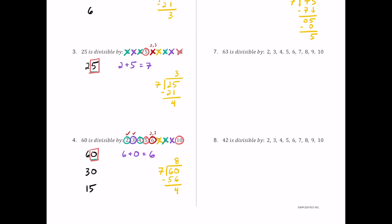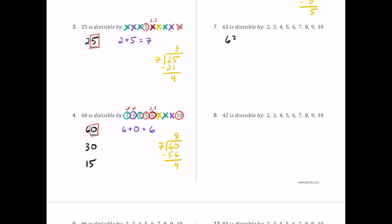For number 7, we have 63. The last digit is 3, which is odd, so 2, 4, and 8 are crossed off. You can also cross off 6 and 10 right away. The sum 6 plus 3 is 9, which is a multiple of both 3 and 9, so those both work. The last digit is 3, not 5 or 0, so 5 and 10 fail. Since 2 failed, 6 fails. For 7: 9 times 7 is exactly 63, so 7 works! So 63 is divisible by 3, 7, and 9.